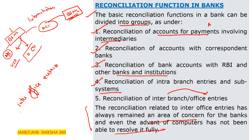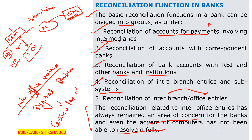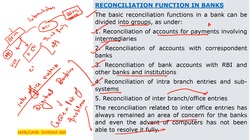The reconciliation related to inter-office entries has always remained an area of concern for banks, and even the advent of computers has not been able to resolve it fully. One important point about digital banking is that while it is beneficial for customers, it also creates problems because customers are not fully aware. For example, customers use unofficial third-party apps instead of official bank apps, which are easier to use but more fraud-prone areas. We must guide customers to use the official bank app to protect themselves from frauds.